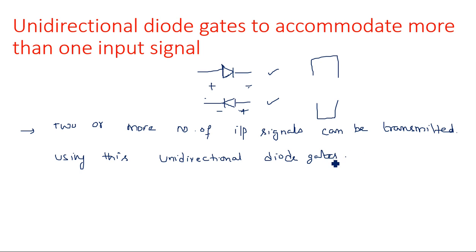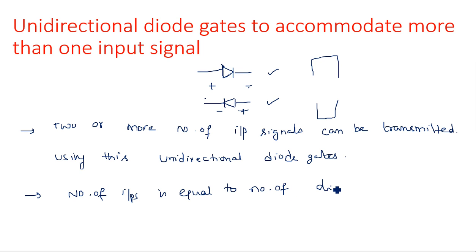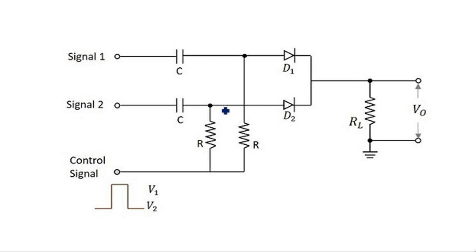How we can transmit more than one input signal depends upon the type of construction. For however many input signals there are, that many diodes we are going to use — each input is applied to one diode. So the number of inputs equals the number of diodes. Here in the circuit, VS1 and VS2 are the two input signals applied through diodes D1 and D2 respectively — two input voltages, two diodes.